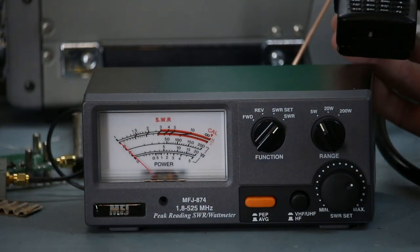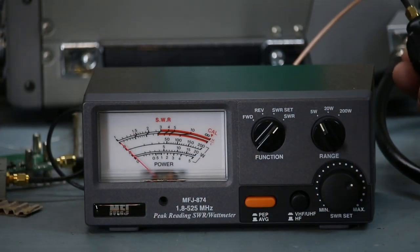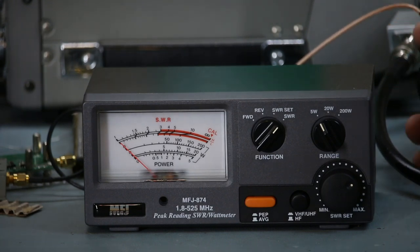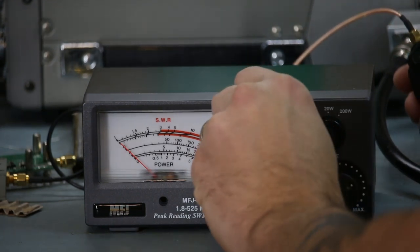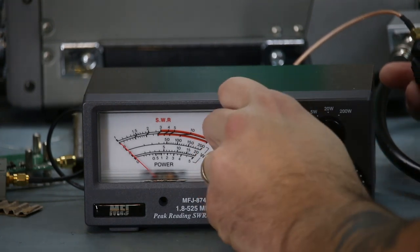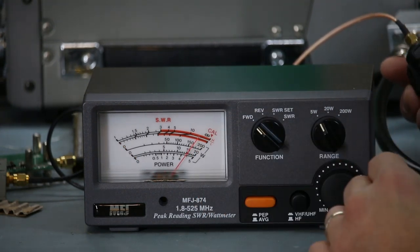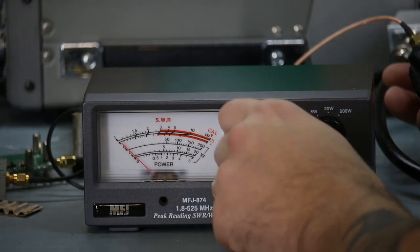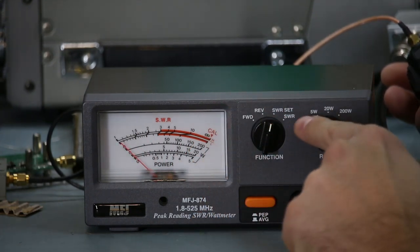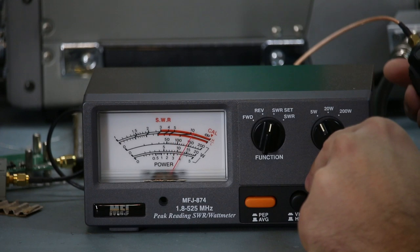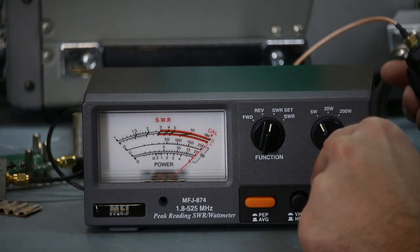I've got my handheld radio here connected and we're operating at 435 megahertz. First thing we need to do to check our SWR is set the level. So let's check the forward power. So about 4.5 watts. SWR set.